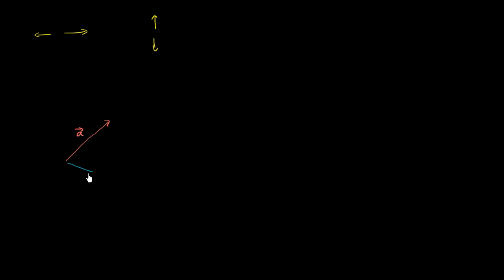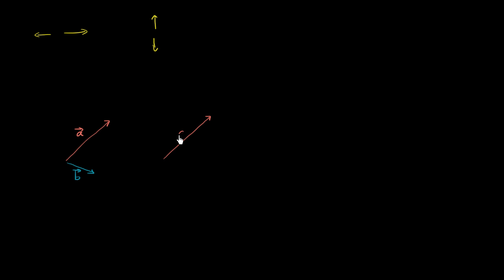And let's say I have another vector — let's call it vector b. And it looks like this. What I want to do is think about what happens when I add vector a to vector b. There's a couple of things to think about when you visually depict vectors. The important thing is, for vector a, that you get the length right and you get the direction right. Where you actually draw it doesn't matter. This could be vector a, or this could also be vector a — notice it has the same length and the same direction.